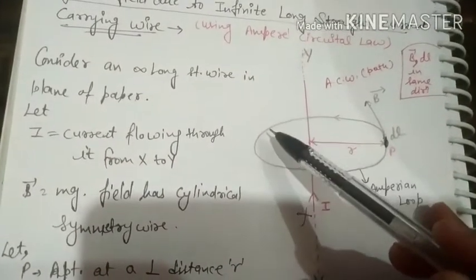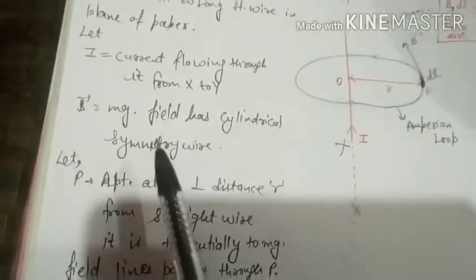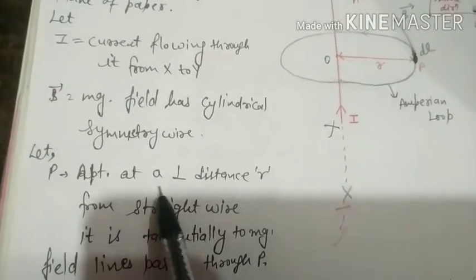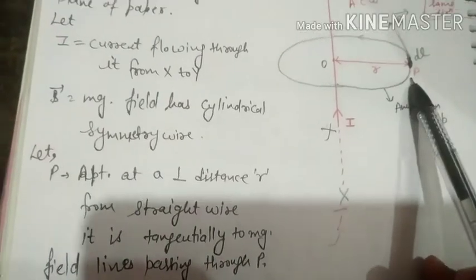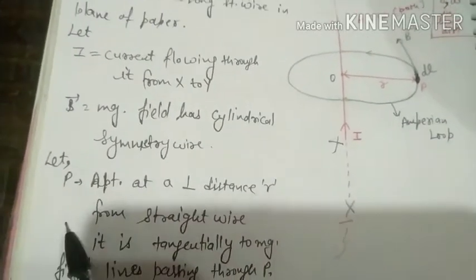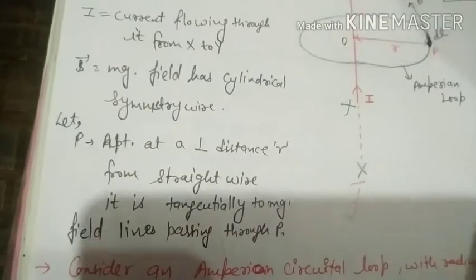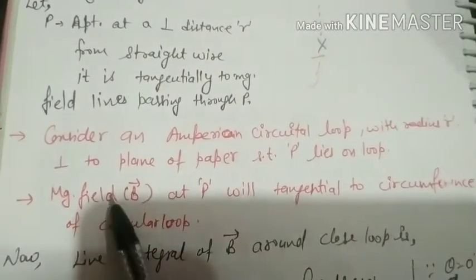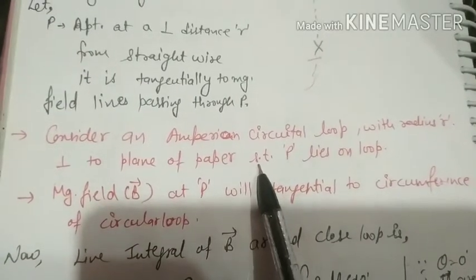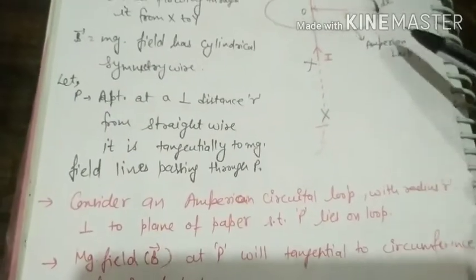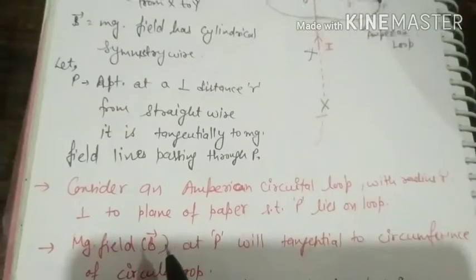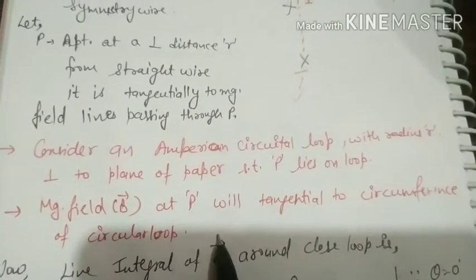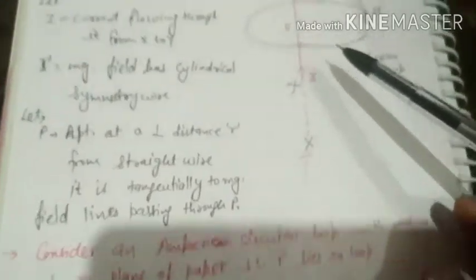Let point P be at perpendicular distance r. Now we have to show this tangent also. We have to take this loop which is perpendicular to the plane of paper, such that P lies on the loop.